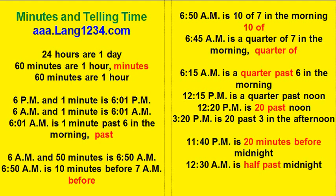Twelve fifteen p.m. is a quarter past noon. Twelve twenty p.m. is twenty past noon. Three twenty p.m. is twenty past three in the afternoon. Eleven forty p.m. is twenty minutes before midnight. Twelve thirty a.m. is half past midnight.